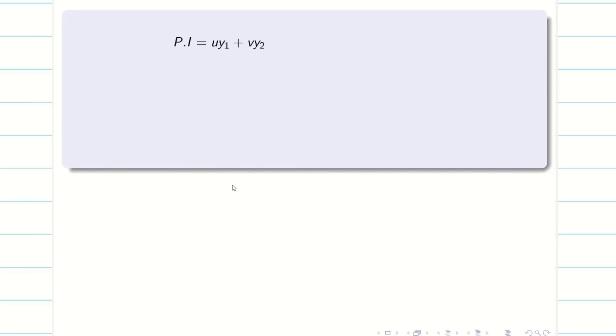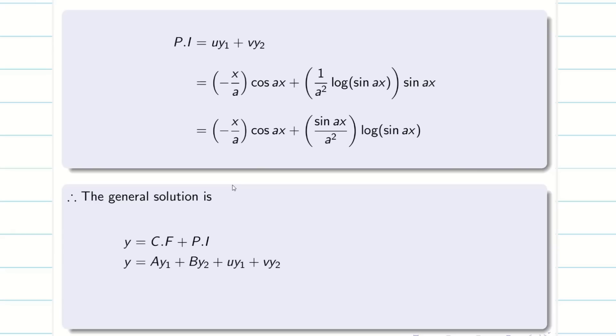Next, substituting u and v in PI. Simplifying this, I can write like minus (x/a) cos ax plus (sin ax)/a² into log sin ax. Finally, the general solution is y equal to CF plus PI. A y₁ plus B y₂ plus u y₁ plus v y₂. Write the answer. Problem gets over.